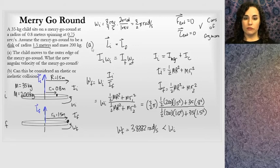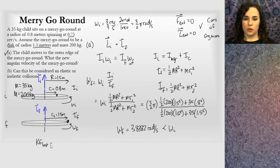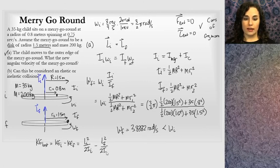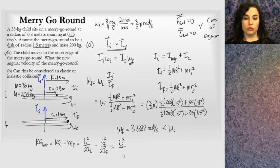That's Part A solved. Part B asks: can this be considered an inelastic or elastic collision? We need to find the kinetic energy loss: KE_loss = KE_initial − KE_final. I'll use the equation that relates kinetic energy directly to angular momentum: KE = L²/(2I). So KE_loss = L_initial²/(2·I_initial) − L_final²/(2·I_final). Since L_initial = L_final, I can factor out L_initial² and get: KE_loss = (L_initial²/2) × (1/I_initial − 1/I_final).